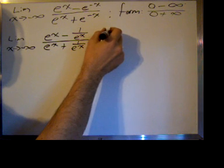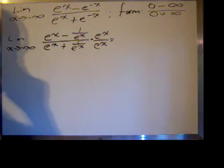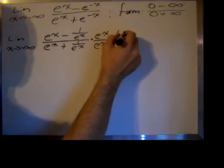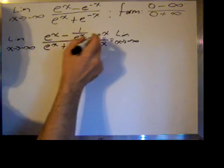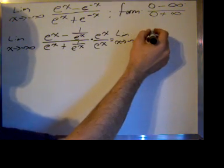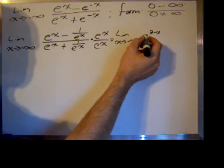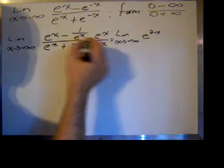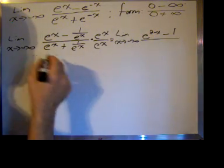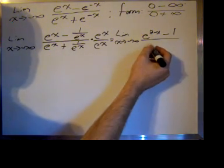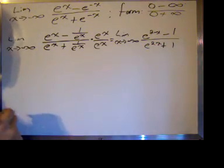So we multiply by e^x over e^x, and when we do that we get the limit as x approaches negative infinity. e^x times e^x is add the exponents, like bases: e^(2x). e^x minus e^x over e^x is 1. e^x times e^x is e^(2x) plus 1.